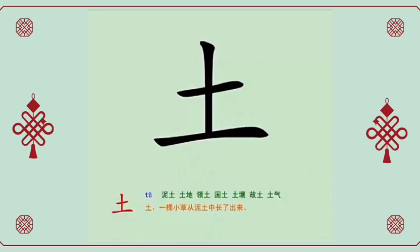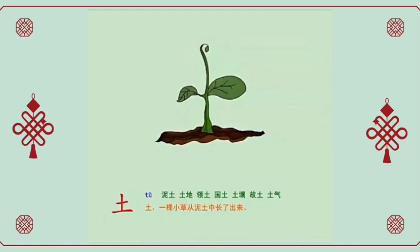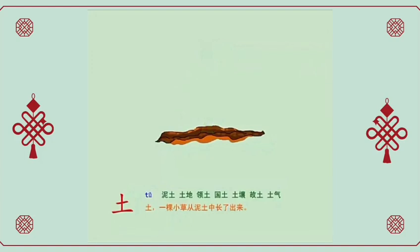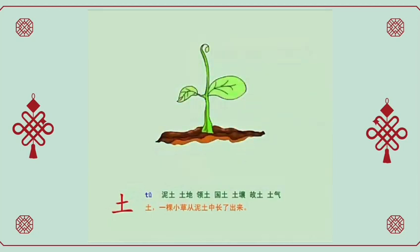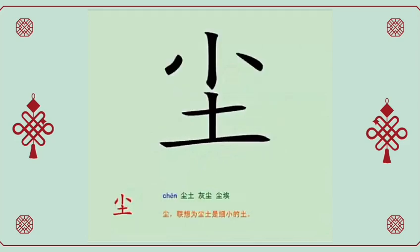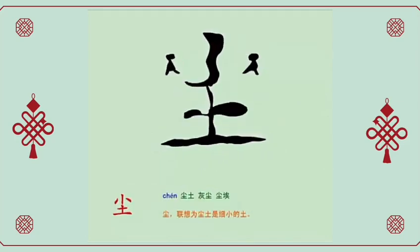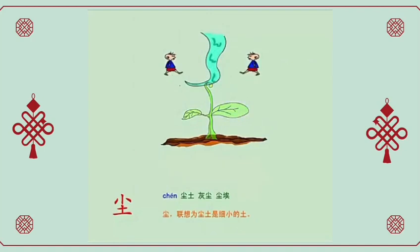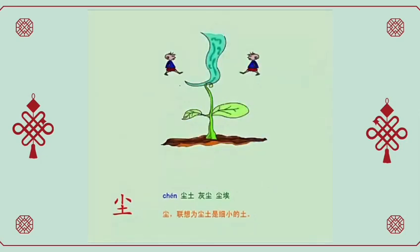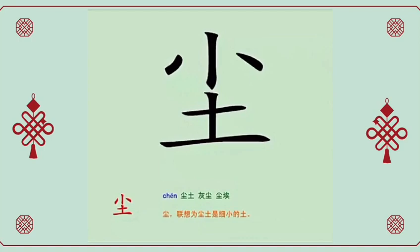土, soil. A small grass grows out of the soil. 国土, territory. Like a person who feels they are simply a speck of dust in the world, in the universe.